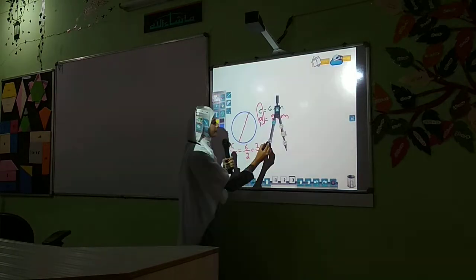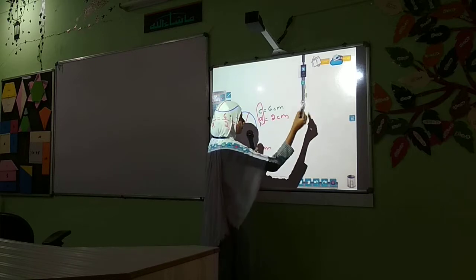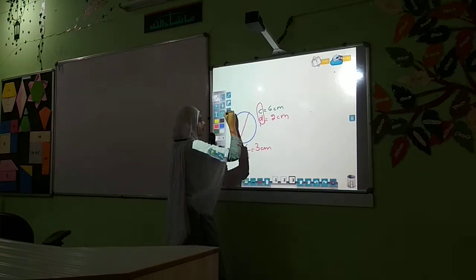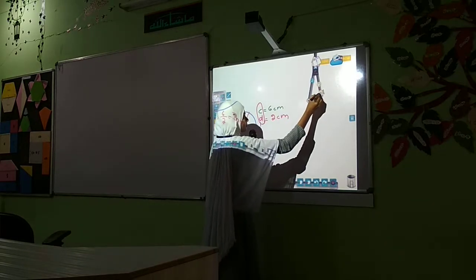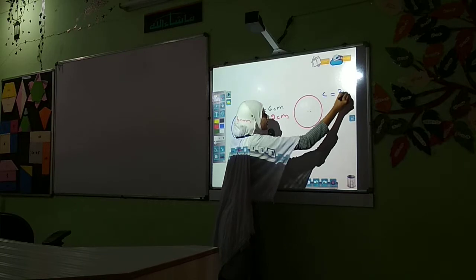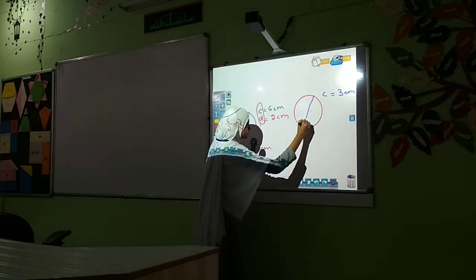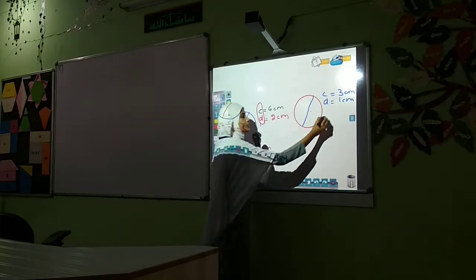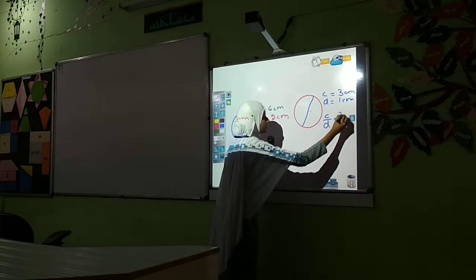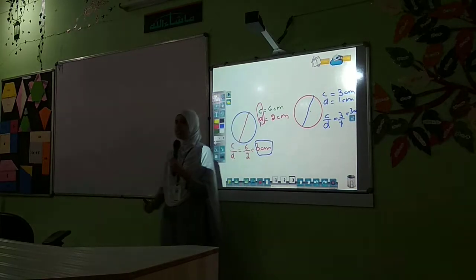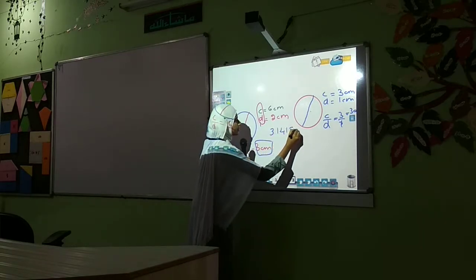Take another circle. Here, C divided by d is equal to 3. The circumference is equal to 3 cm and the diameter is nearly 1 cm. Here also, we take the ratio between those two terms: C divided by d is equal to 3.